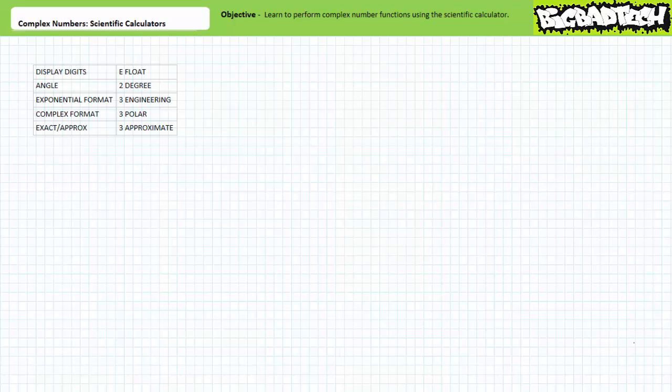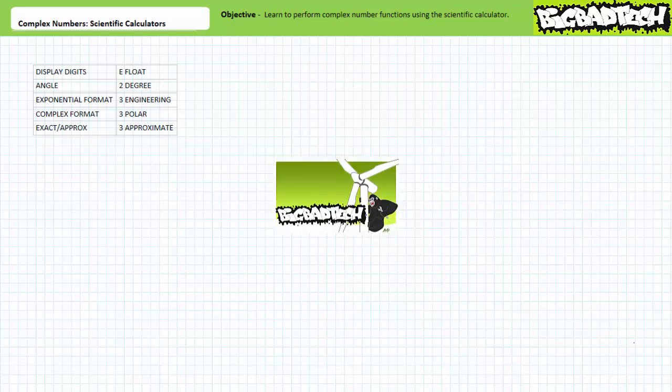Luckily, the Texas Instruments TI-89 Titanium Edition Scientific Graphing Calculator can handle complex numbers in both rectangular and polar format. Recall from the Basic Electronics 1 DC Circuit Analysis Playlist DC Math Lecture, and again in the more recent Sine Waves lecture at the Big Bad Tech channel, we placed our scientific calculator in a specific operational mode. If you've done so already, you're in the clear, but if not, here's the procedure to do so.